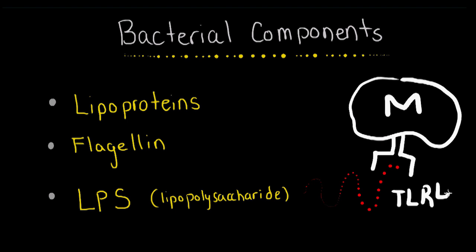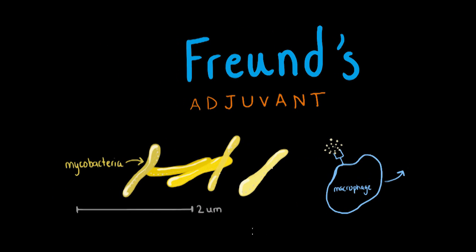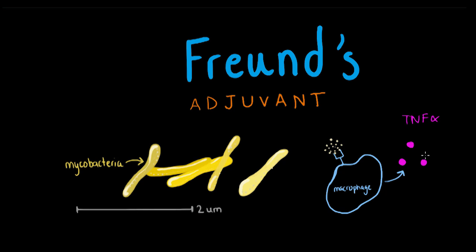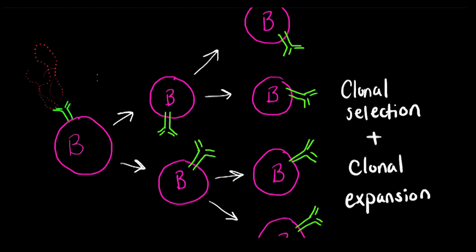These adjuvants can function to protect the antigen by prolonging the immune response. They can also enhance the immune response by stimulating the release of cytokines. An example would be the inactive components of mycobacterium, also known as Freund's adjuvant, and it enhances the immune response by stimulating the release of TNF, or tumor necrosis factor, which facilitates the entry of neutrophils, NK cells, and other effector cells into the infected area.